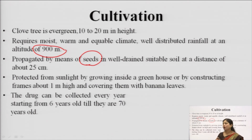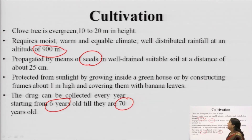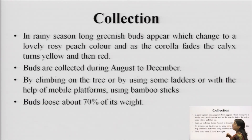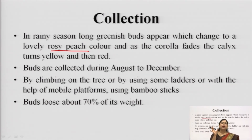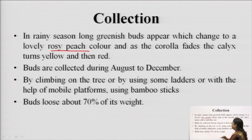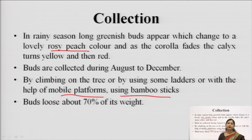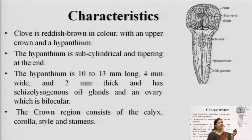Once the tree matures — from 6 years up to 70 years — clove buds can be collected depending on the flowering season. In the rainy season, the buds are greenish, gradually changing to a rosy peach color when mature. The cloves must be plucked before the flower opens — once open, the flower has completed development and will get pollinated. Collection is done by climbing trees or using bamboo sticks to thrash the tree so the clove buds fall off, after which they are dried to get the final clove product.